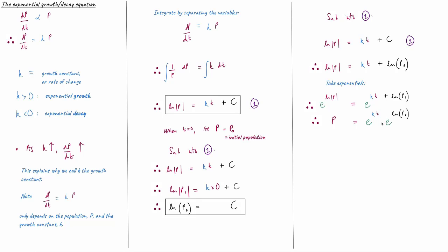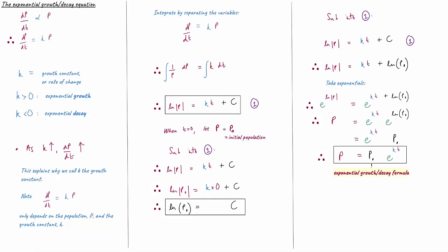The exponential and the natural log as inverse functions cancel one another out, leaving us with the argument P. This allows us to write P equals... We can further simplify the e to the power of natural log of P naught term — again the exponential and natural log cancel, leaving P naught. Swapping these two items for a neater result, we have the exponential growth or decay formula: P = P₀ e^(kt).